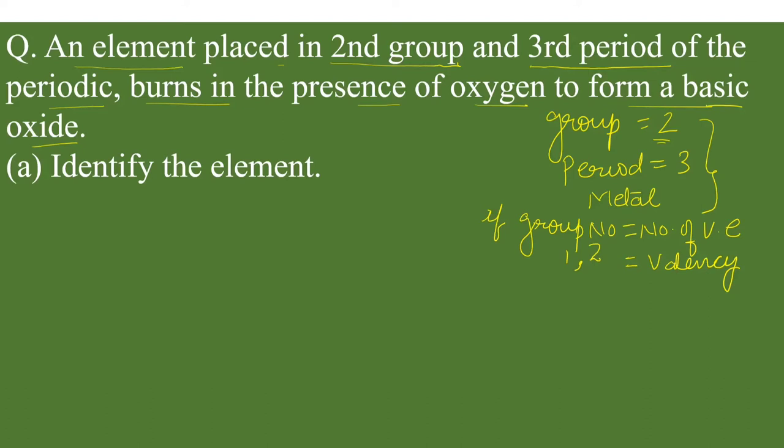For example, if group number is 1, so valency also 1. If group number 2, then valence electrons 2 and valency 2. So its valency is equal to 2.